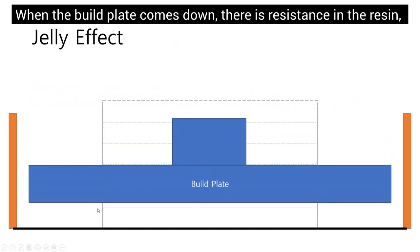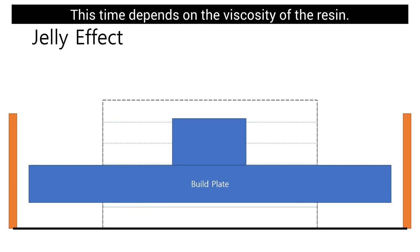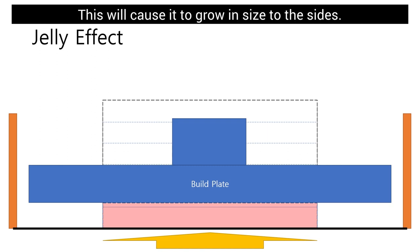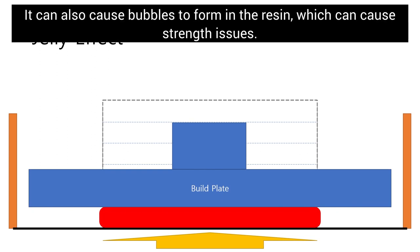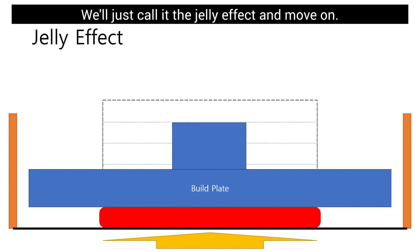Imagine the vat is filled with resin; the layer thickness is represented by a scale. When the build plate comes down, there is resistance in the resin, so it takes time to fully position itself. This time depends on the viscosity of the resin. If you don't wait long enough and photo-polymerization starts, it will begin to cure unevenly, causing glow inside to the side and bubbles in the resin, which can cause strength issues. We'll call this the jelly effect.